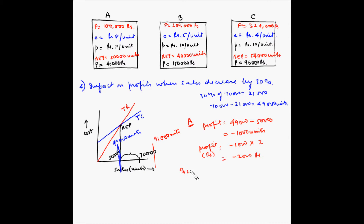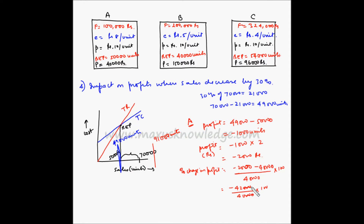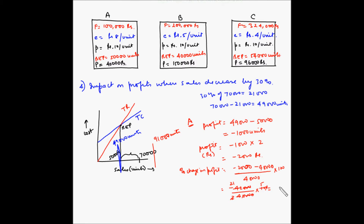Percentage change in profit for firm A = (-2,000 - 40,000) / 40,000 × 100 = -42,000 / 40,000 × 100 = -105%. So the profit decreases by 105% for firm A.